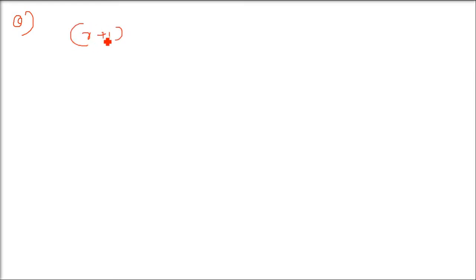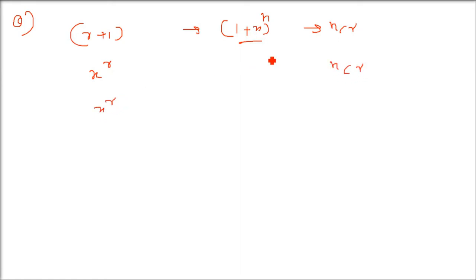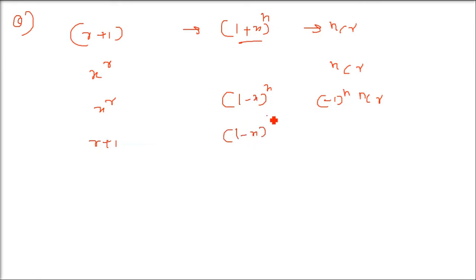For problems relating to coefficients in binomial expansion: in (1+x)^n, the coefficient of x^r in the (r+1)th term is nCr. In (1-x)^n, the coefficient of x^r is (-1)^r · nCr, and the coefficient of the (r+1)th term is also (-1)^r · nCr.